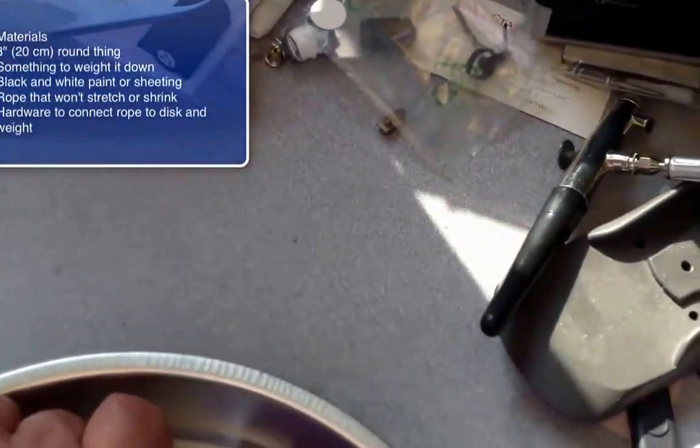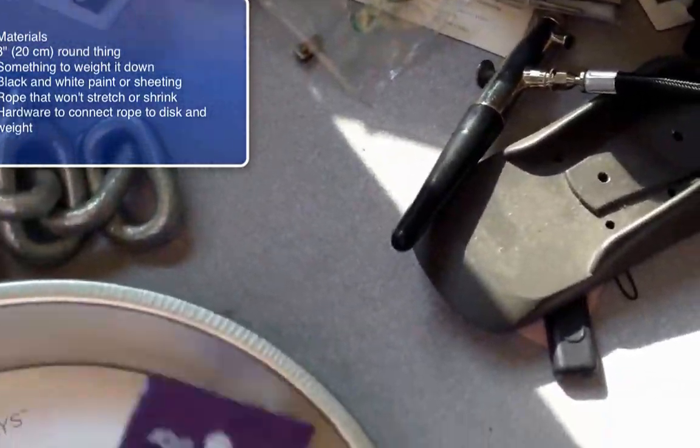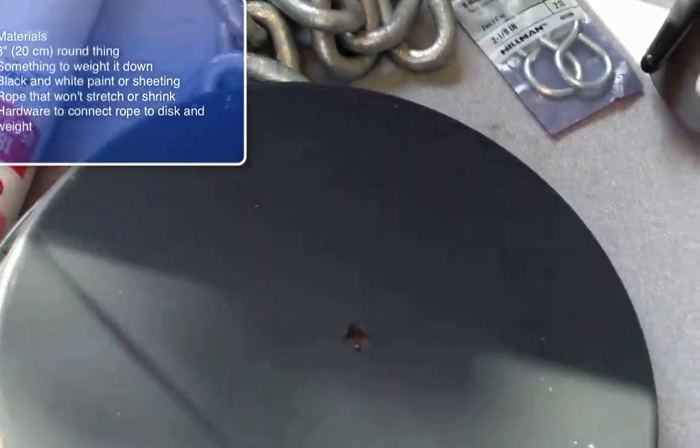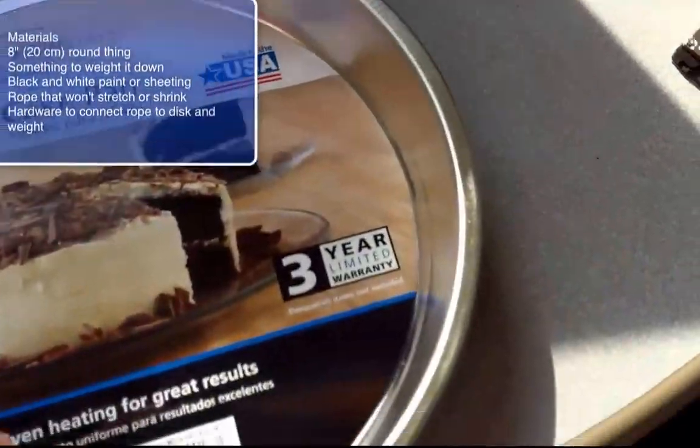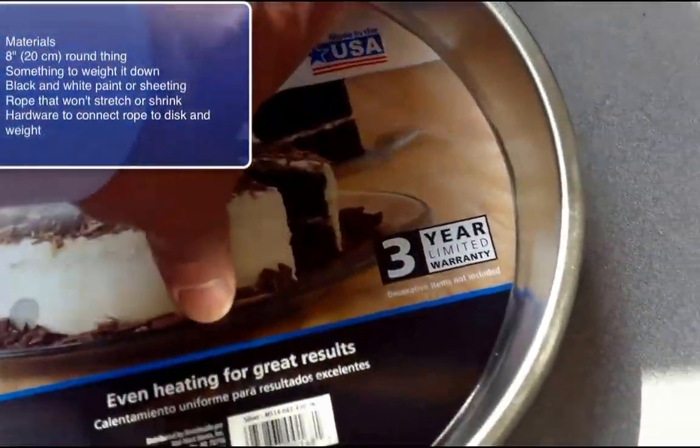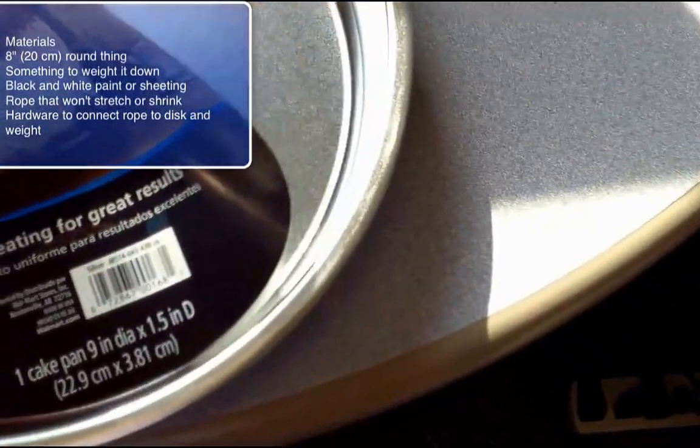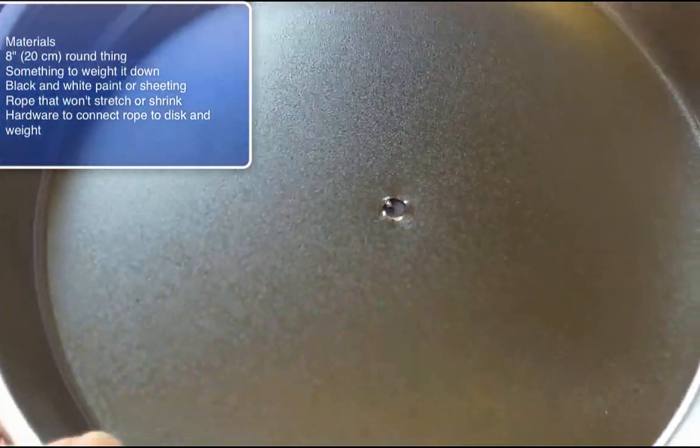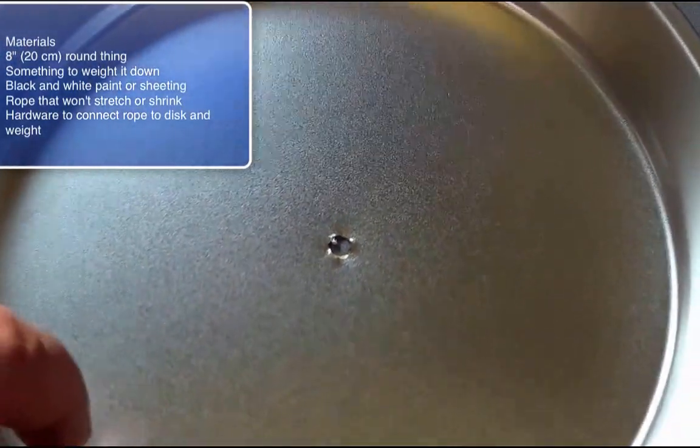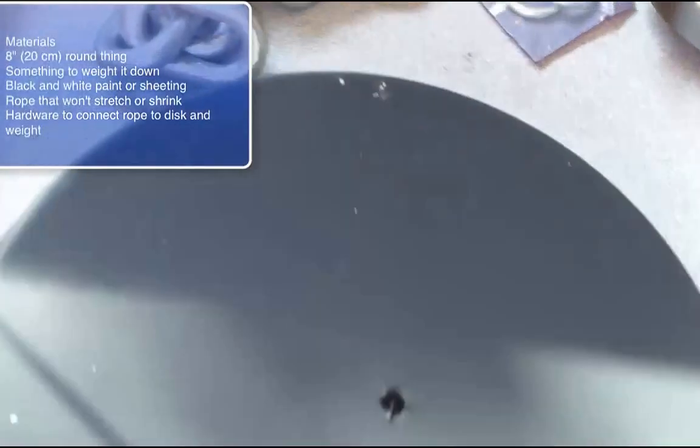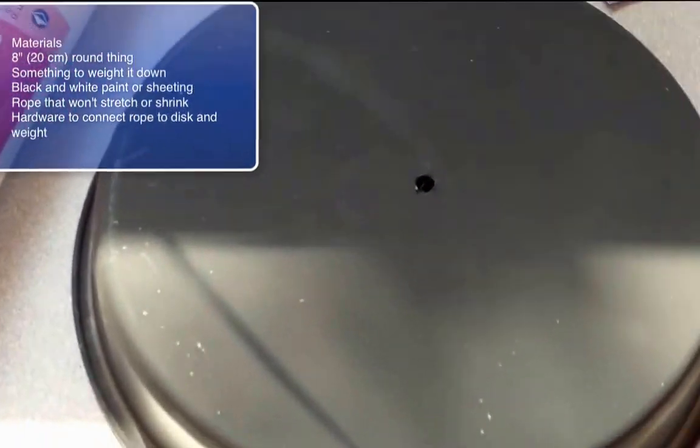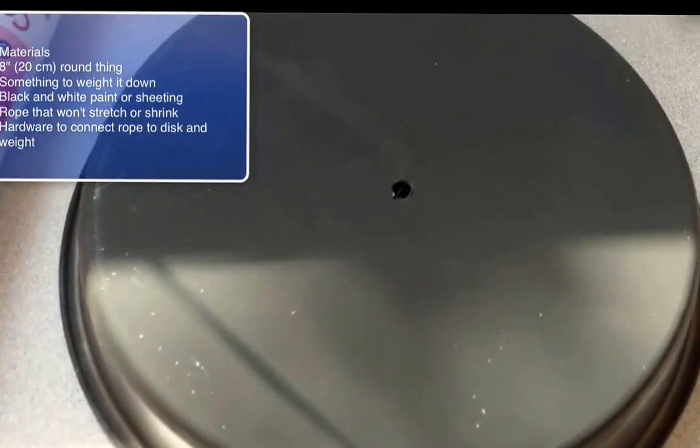The first thing you need is something round, round and about 8 inches in diameter. This is a cake pan, it cost 88 cents, you can find it at a discount store. What I've done for this cake pan is to drill about a quarter inch hole dead center in this thing, and the other thing I've done is to take a little black paint and paint the bottom surface of it, and the reason for that will be apparent in just a second.